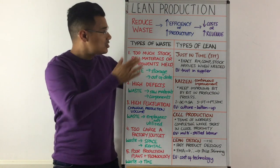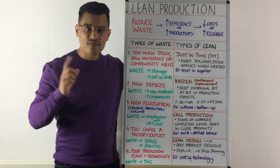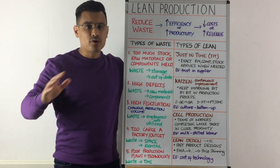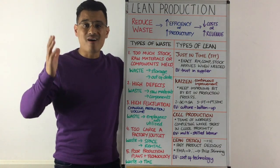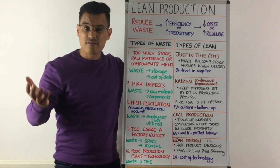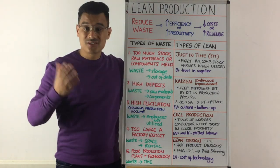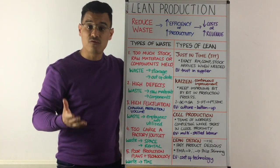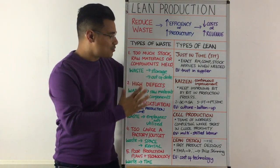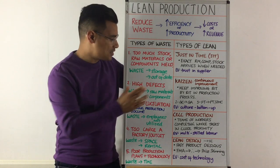Now let's think about waste and the types of waste that exist. Well, the first is that you've got too much stock, too much raw materials, too many components that are held in your factory, in your warehouse, and that's got storage cost. So that cost itself for storing too much stock, too much in terms of raw materials or components — storage cost — that's a waste.